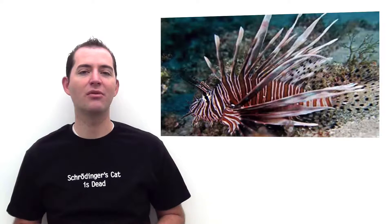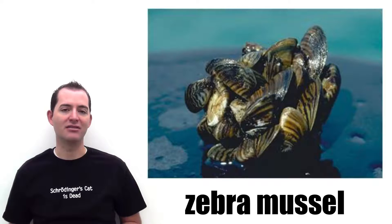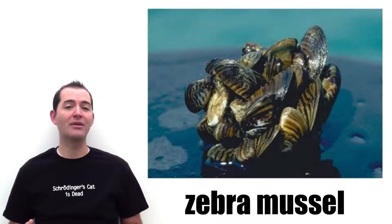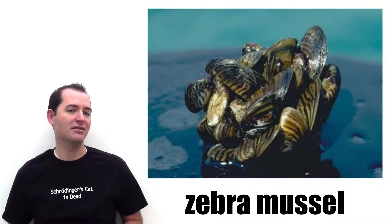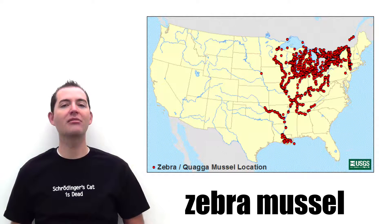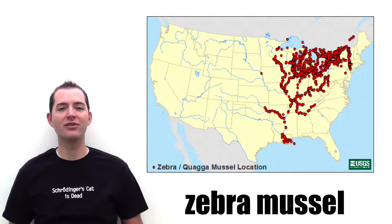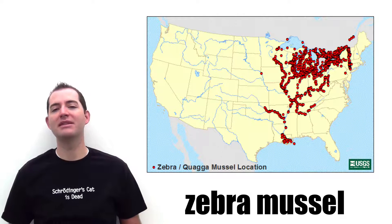Non-native species often disrupt the food webs found in the ecosystems where they're introduced. One example of a non-native species is the zebra mussel, which were transported from Eurasia to the Great Lakes of the United States in ship ballast water. They have since spread throughout the United States, out-competing native species for food and habitat, and are currently threatening a number of various species.